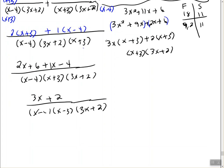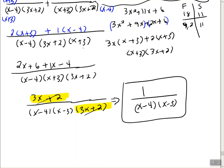Now that we've simplified, we see a common binomial (3x plus 2) in both the numerator and the denominator, so they cancel each other out. Since there are no other factors in the numerator, we put a 1 there. The final answer is 1 over (x minus 4)(x plus 3).